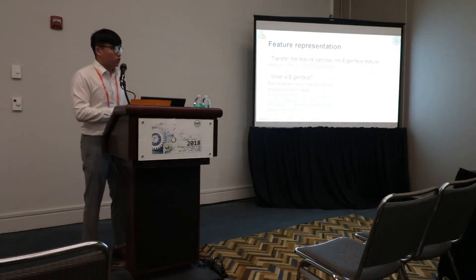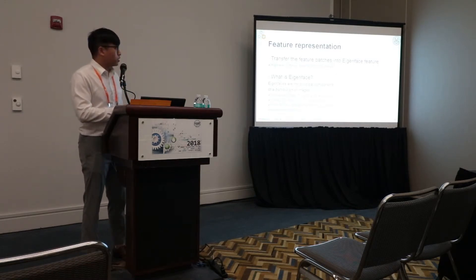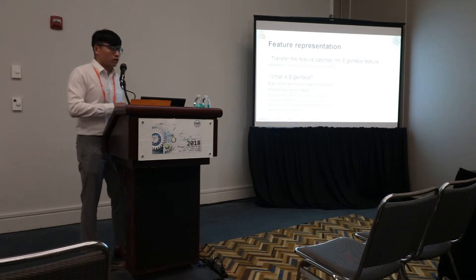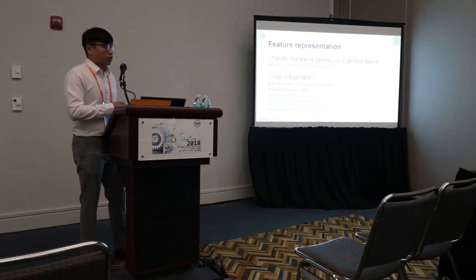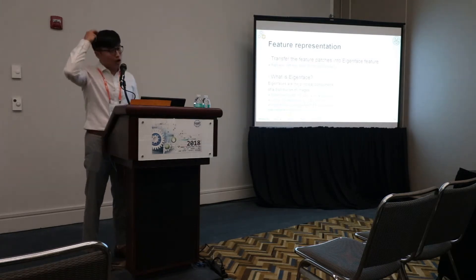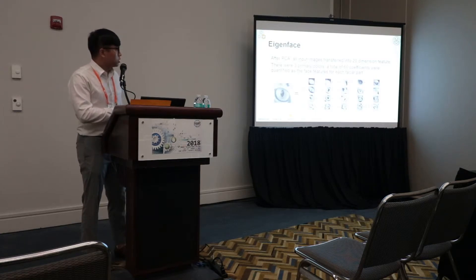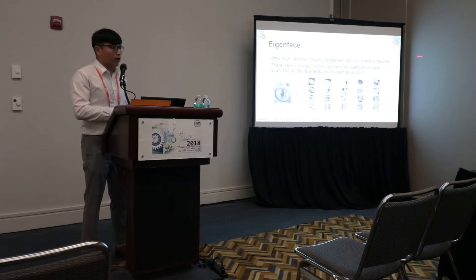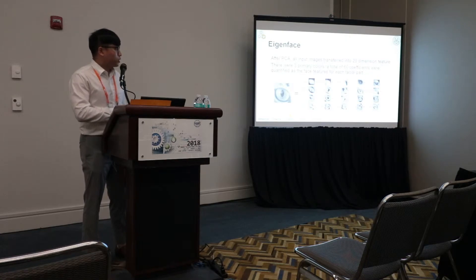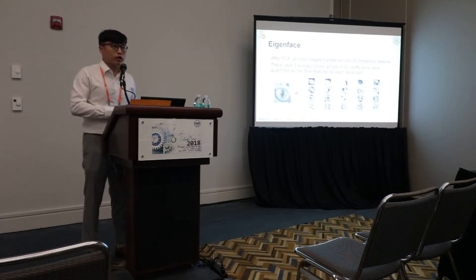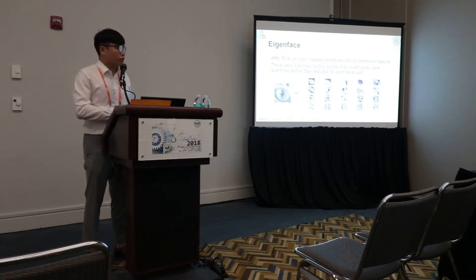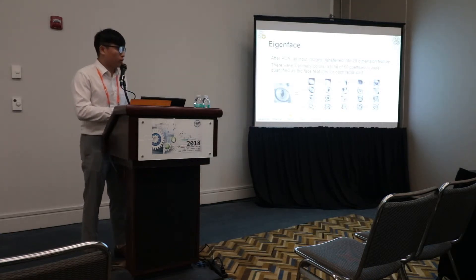The next step is feature representation. We apply eigenface to these five facial patches. The original images are in HSV color, so we convert them to grayscale. The top 20 principal components of the top 20 eigenvalues are defined as the eigenfaces. Each facial patch can be represented as a linear combination of these 20 eigenfaces, giving 20 coefficients as a new feature vector.